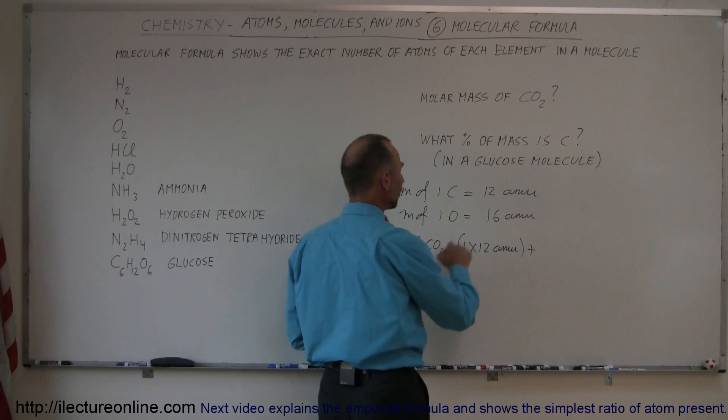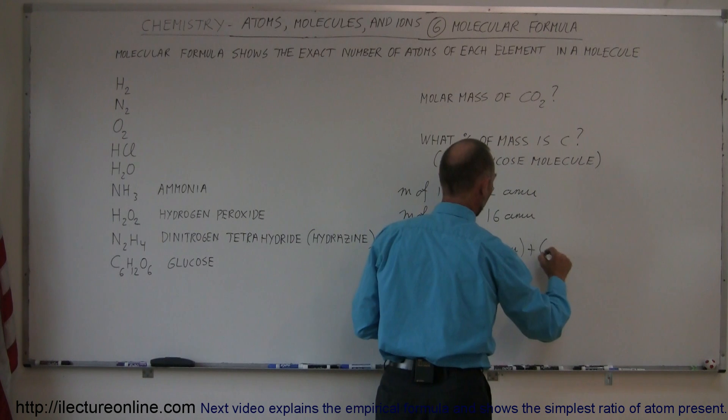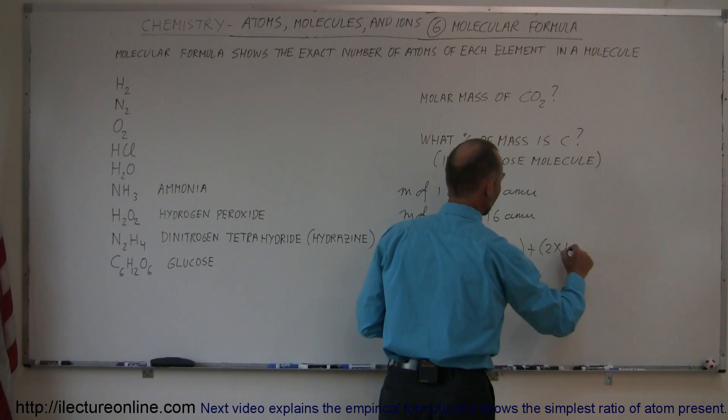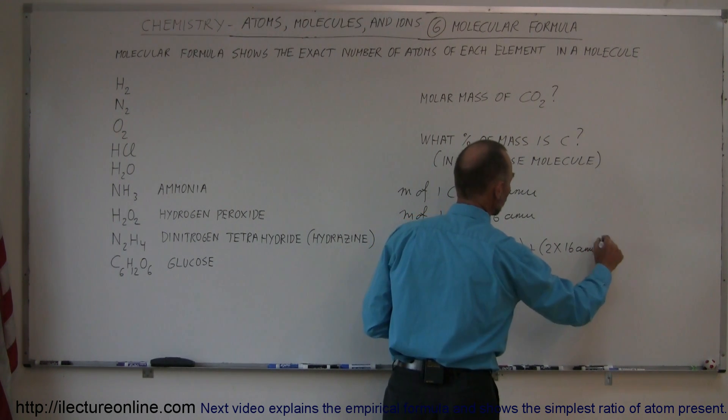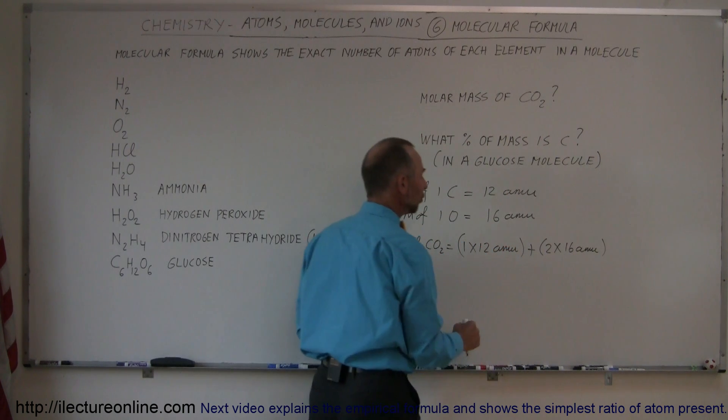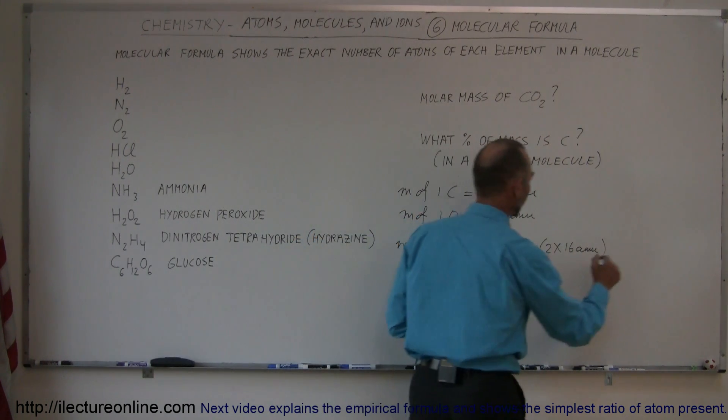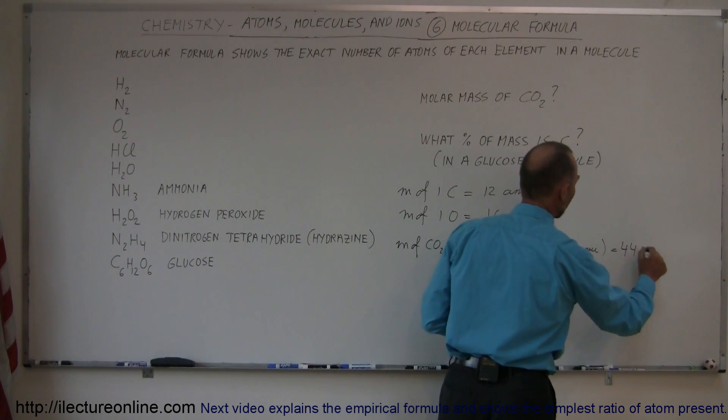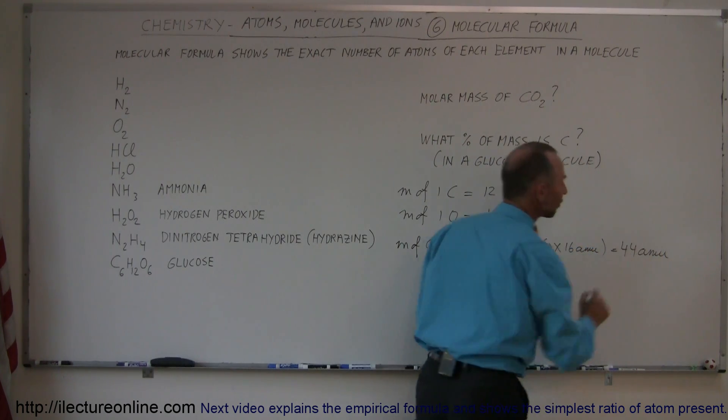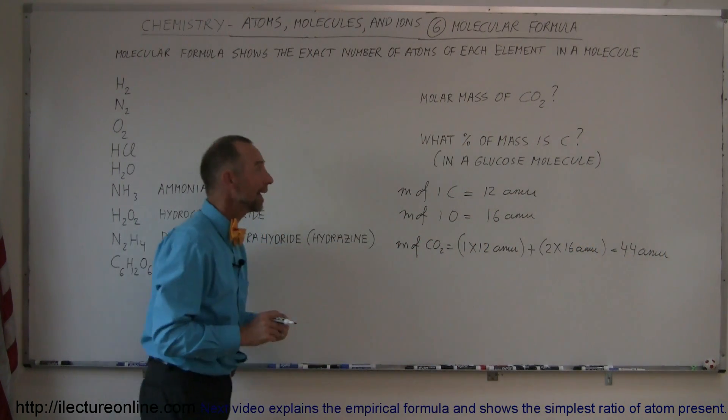Plus two times the mass of an oxygen, so plus two times 16 AMUs, so two times 16 is 32, plus 12 is 44, so this is equal to 44 AMUs, which is the mass of a single carbon dioxide molecule.